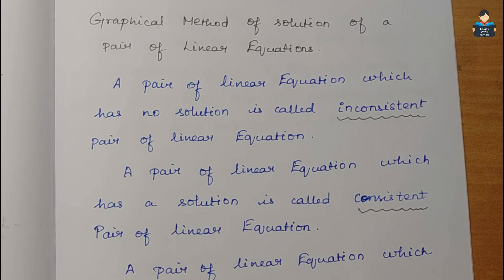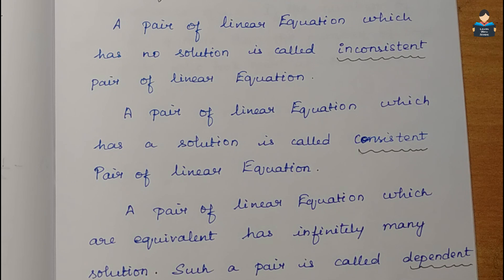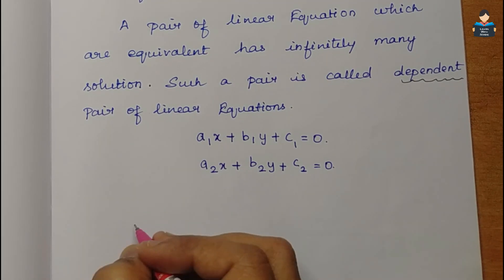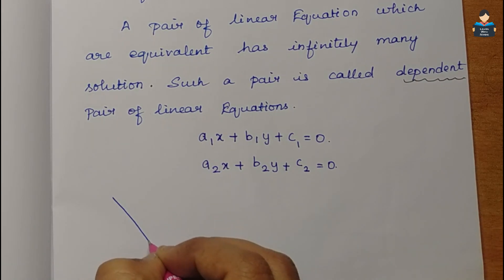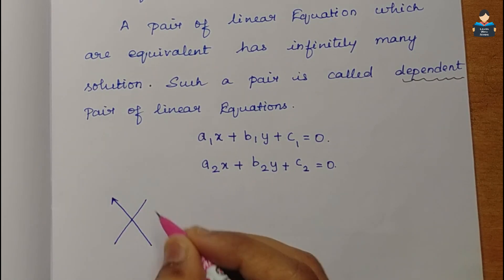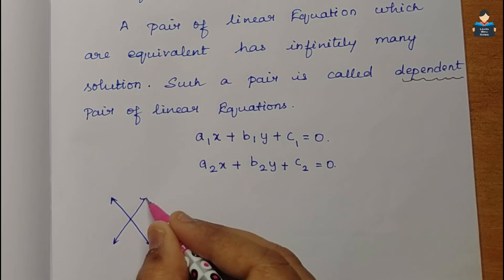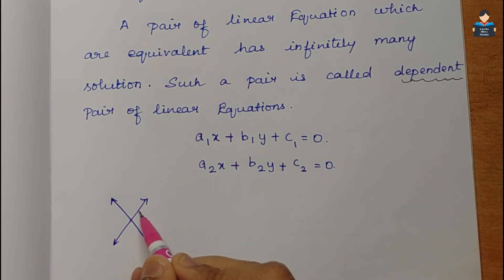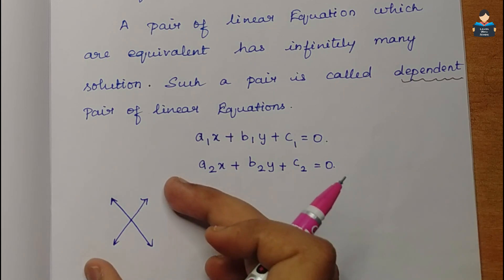If there is no solution it is inconsistent. If there is a solution it is consistent. For consistent equations, there is either a unique solution or infinitely many solutions. We will see intersecting lines - when two lines intersect, each equation represents a particular line.